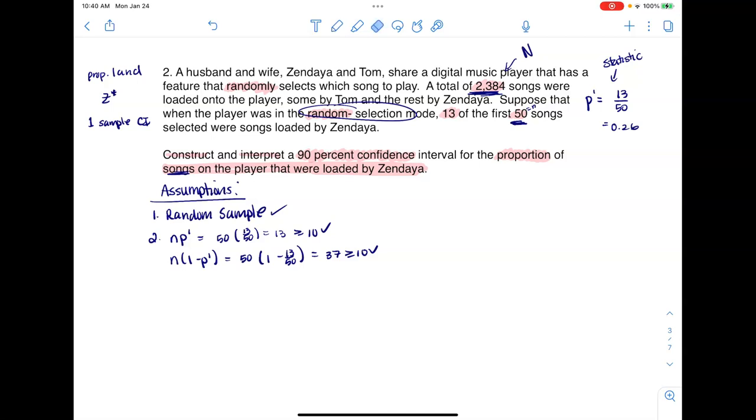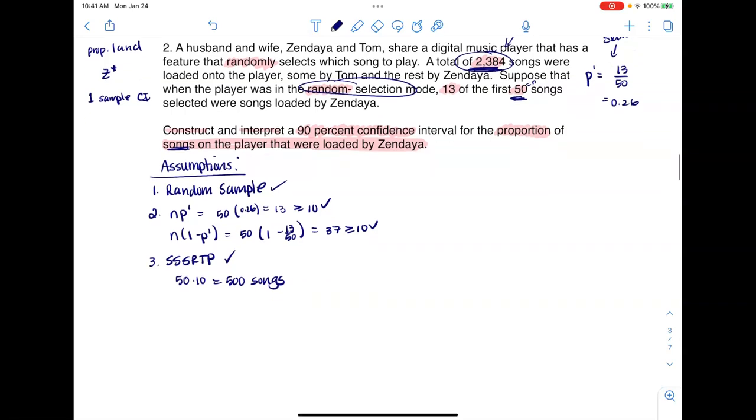I know that 13 out of 50 songs were loaded by Zendaya, and this is about 26%. Because this came from a sample, this is a statistic. So let's go crunch this. If I have NP prime, this is going to be 50 times 13 out of 50, that's going to give me 13 songs loaded by Zendaya, which is greater than or equal to 10. Then I got to find the complement. Some folks will be more comfortable writing the decimal 0.26 here, and if that's you, that's great. This is going to wind up being 37, which is also greater than or equal to 10. Basically 37 of the songs were loaded by Tom.